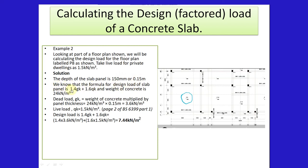The formula for design load of a slab panel is 1.4 GK plus 1.6 QK, and the weight of concrete is 24 kilonewtons per meter cubic. Therefore, the dead load GK is equal to the weight of concrete multiplied by the panel thickness, which is 24 kilonewtons per meter cubic times 0.15 meters, giving 3.6 kilonewtons per meter squared. Live load for private dwellings is 1.5 kilonewtons per meter squared, according to page 2 of BS 6399 part 1. So the design load is 1.4 times 3.6 plus 1.6 times 1.5 kilonewtons per meter squared, which adds up to 7.44 kilonewtons per meter squared.